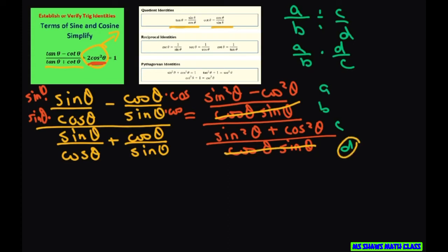And sine squared plus cosine squared theta is 1 according to our Pythagorean identity, so that's just 1. So we're left with sine squared theta minus cosine squared theta.